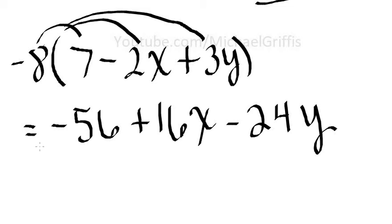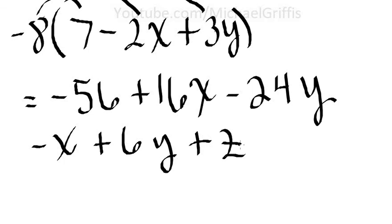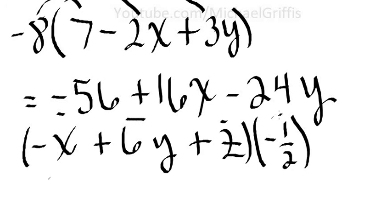Let's do one more and we'll call it quits. So negative x plus 6y plus z, all multiplied by a negative half. Notice I wrote this negative half on the right-hand side. It doesn't matter if it's on the left or the right. Distribute this negative half to each term. Negative half times negative x makes that positive, and we could write it as x over 2.